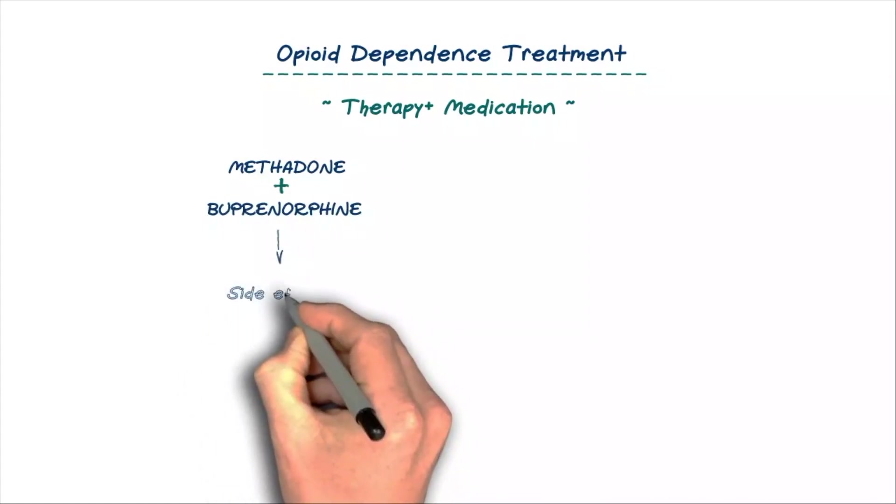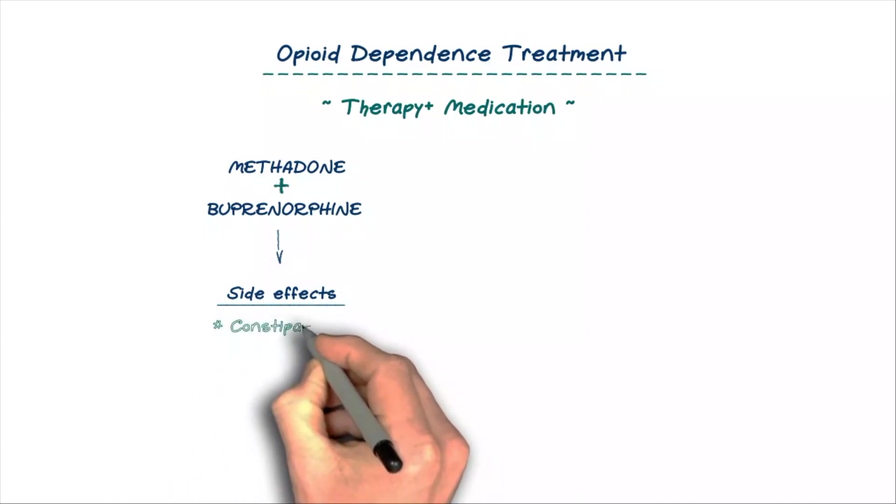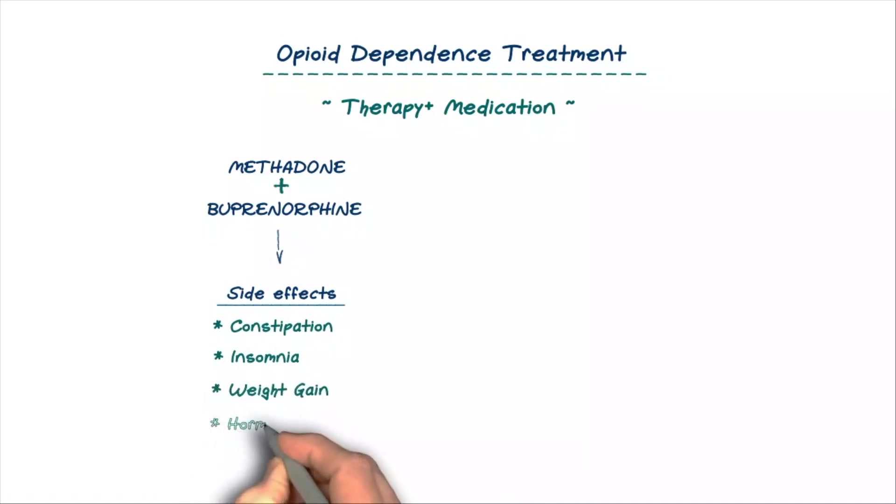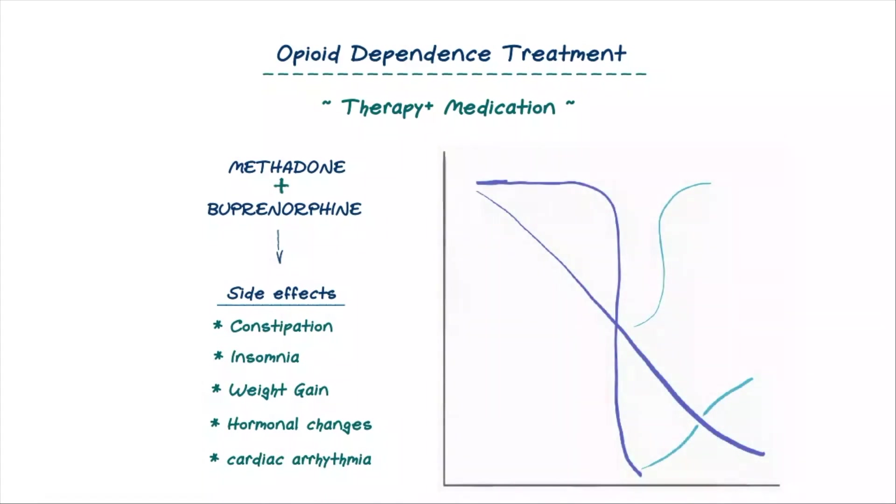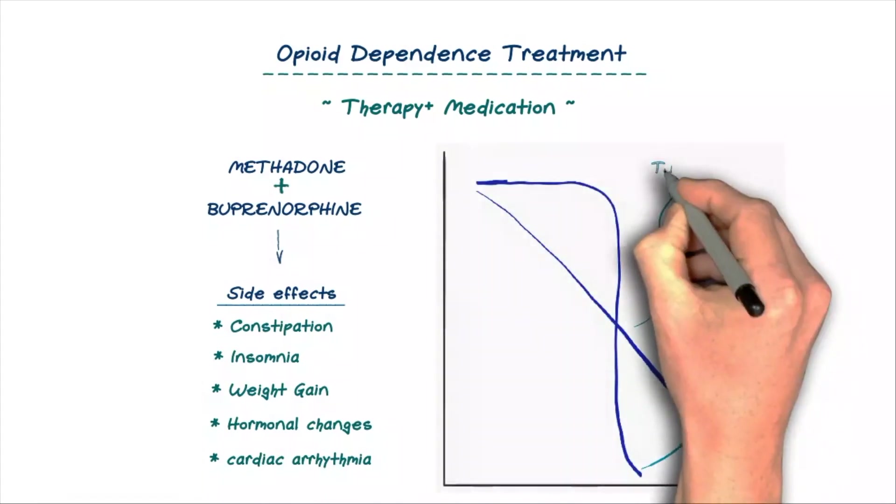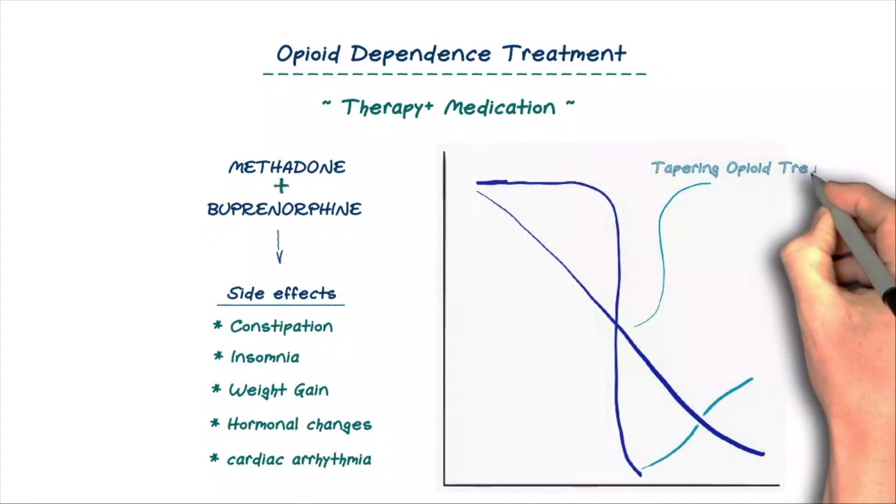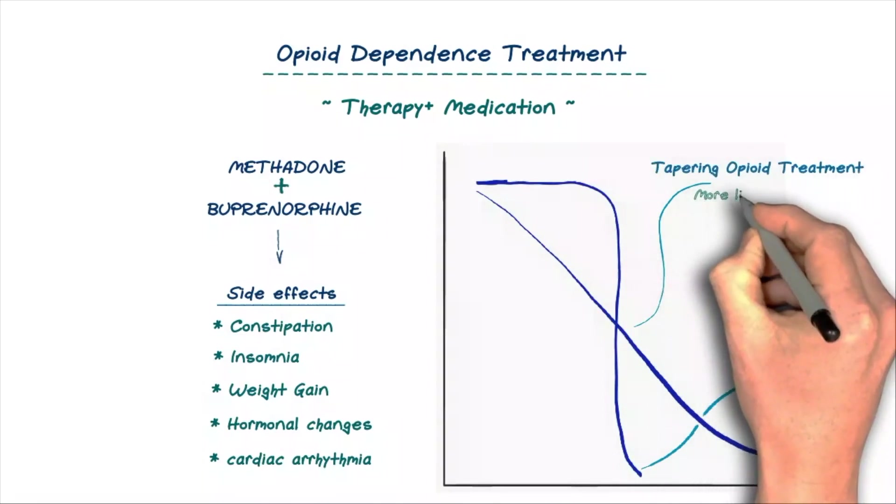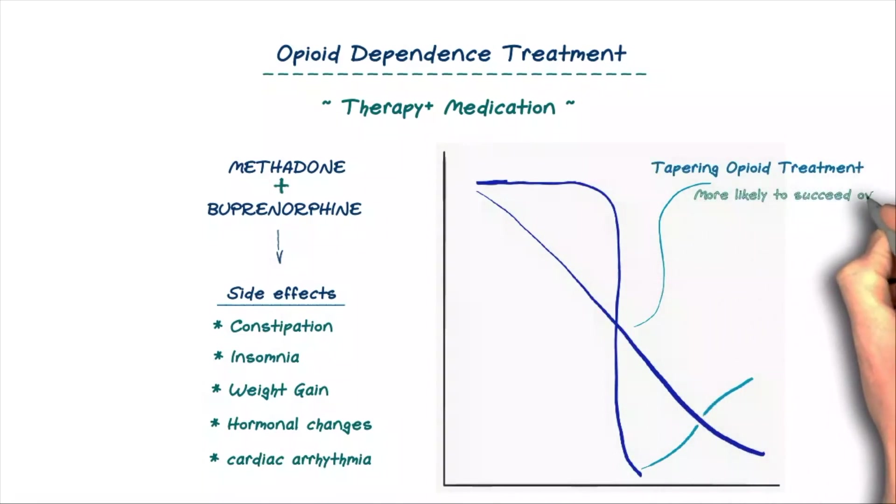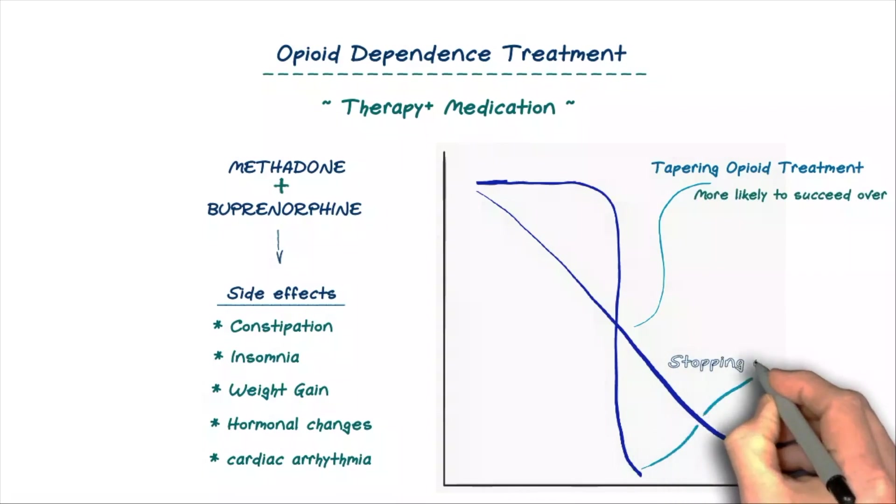Buprenorphine has a ceiling effect, meaning that above a certain dose it does not have any more of an effect which reduces the chance of an overdose. These medications can competitively bind to the opioid receptor without producing the same euphoria as the opioids they take the place of. Since they have opioid effects though, they can cause side effects like constipation, insomnia, weight gain, hormonal changes and cardiac arrhythmias. The good news is that over time an individual can safely taper their use of opioid treatments altogether. And this approach is more likely to succeed than simply stopping opioids without these treatments.